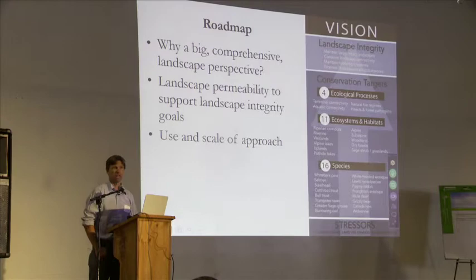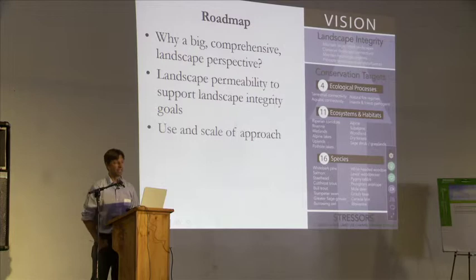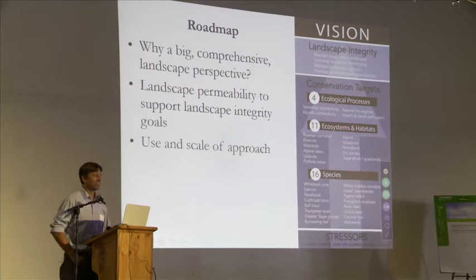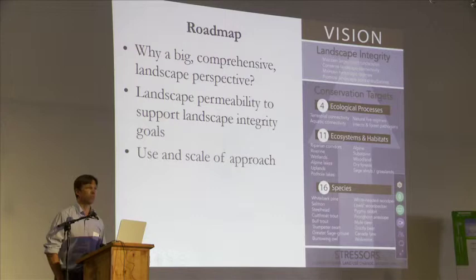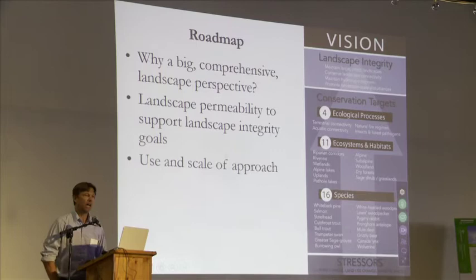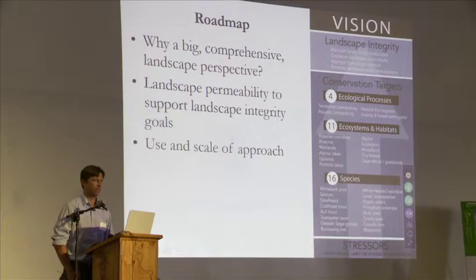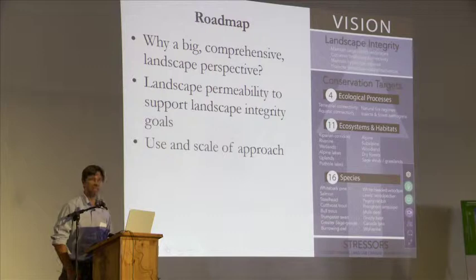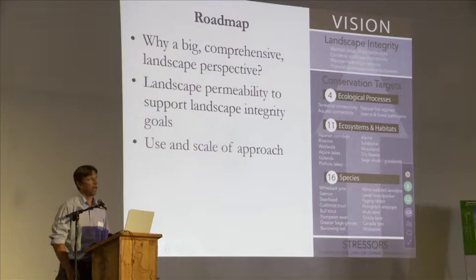What I'd like to do today is talk about landscape permeability mapping that I've recently completed. I was really excited — more excited that the model actually ran on Monday morning. Part of the thought here is: why do we need a big, comprehensive landscape perspective, and how do we go about doing that? The vision of the GNLCC science document is really to support landscape integrity — maintain large intact landscapes and conserve landscape connectivity, so this is directly linked to those broad goals.